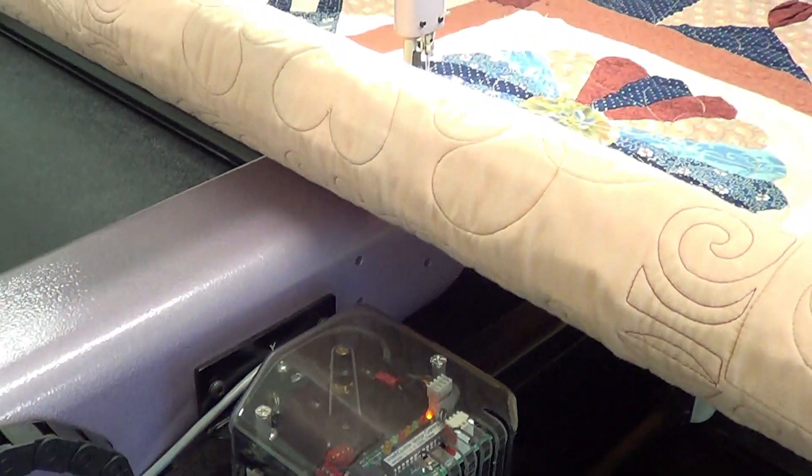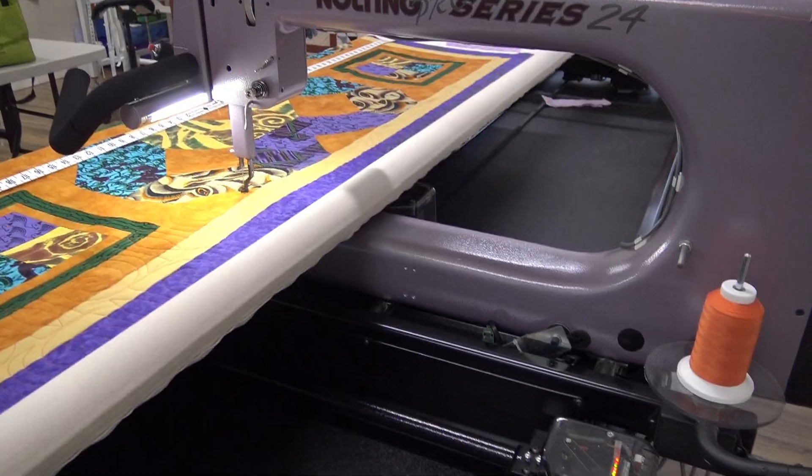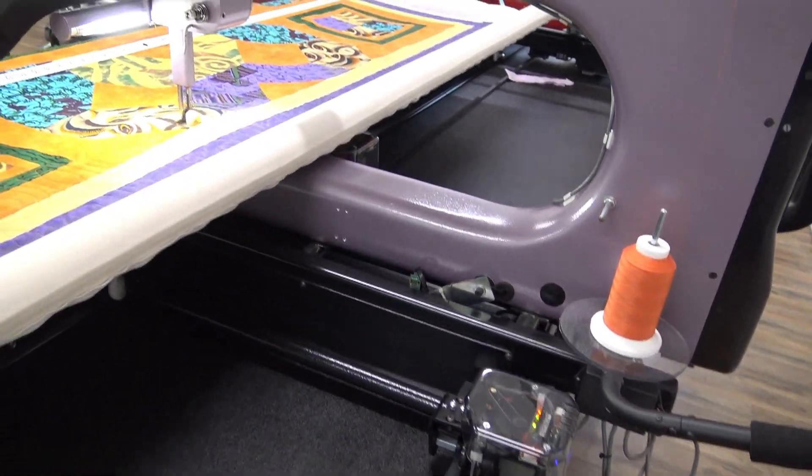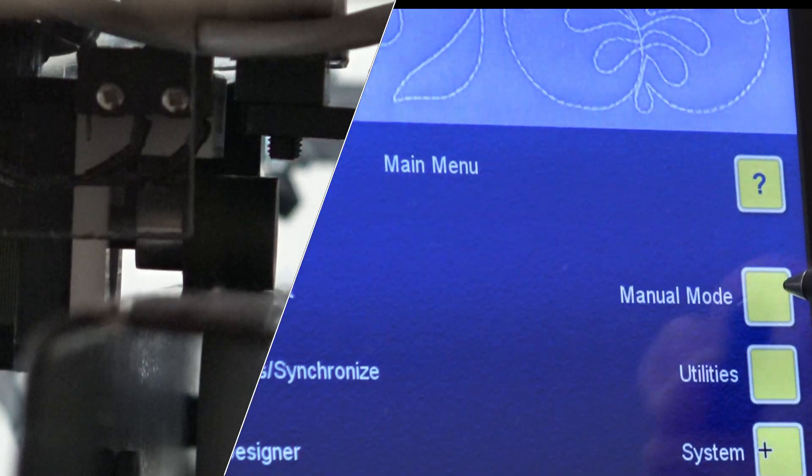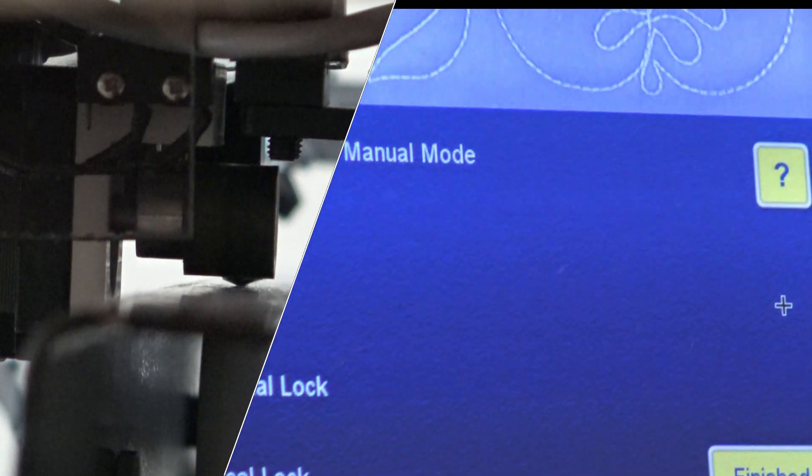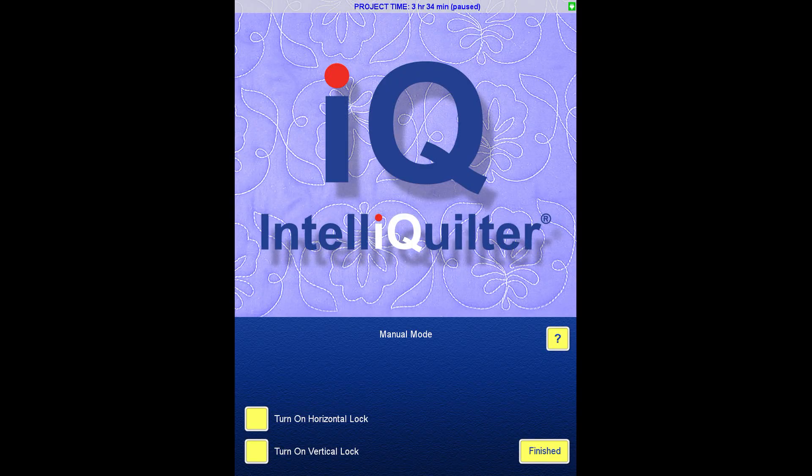IQ utilizes simple, low-maintenance drive motor technology to move the carriage and machine smoothly for quilting. At the touch of a button, lift the motors and switch to manual mode for freewheeling, hand-guided stitching.